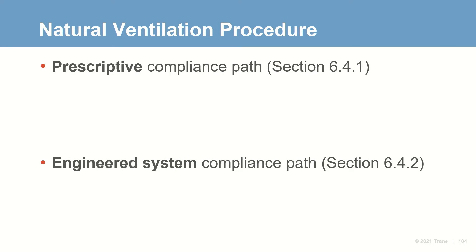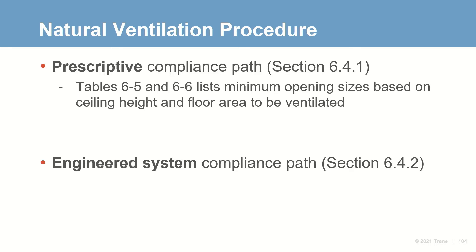This procedure includes two compliance paths: a prescriptive path and an engineered system path. When using the prescriptive path, you look up the minimum required sizes of natural ventilation openings in a table, based on ceiling height and the floor area to be ventilated.